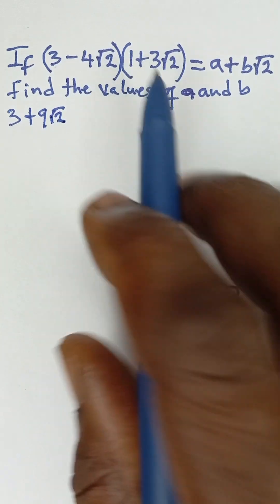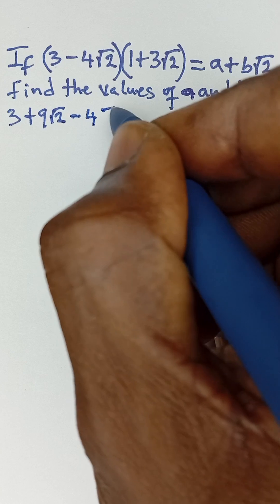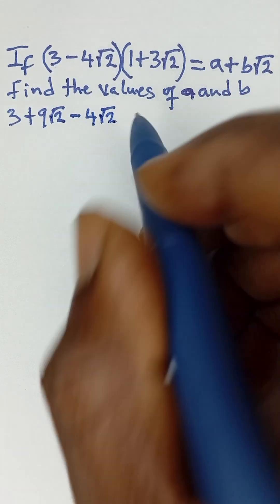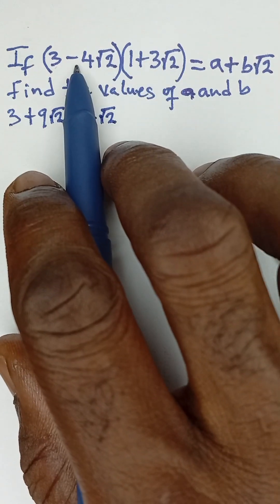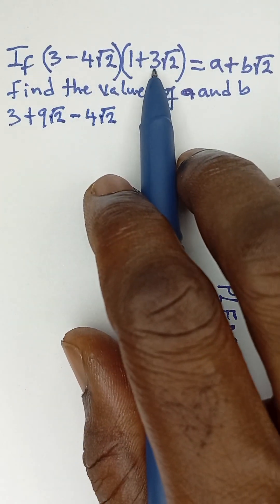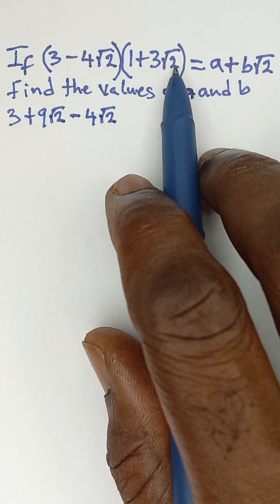And then -4√2 multiplied by 3√2: this -4 multiplied by 3 will be -12, and then √2 multiplied by √2 is simply 2 without the root sign.